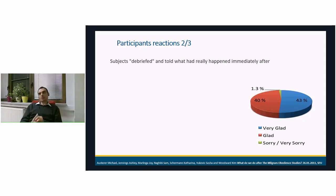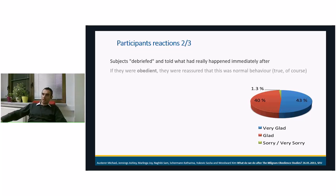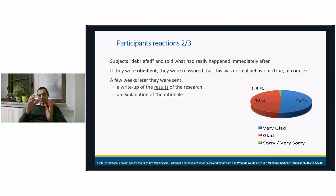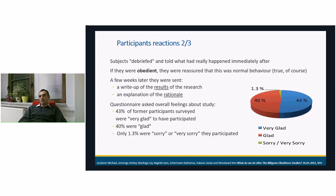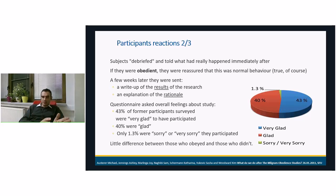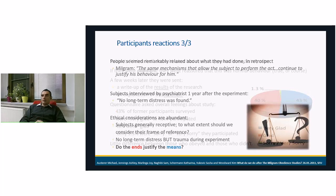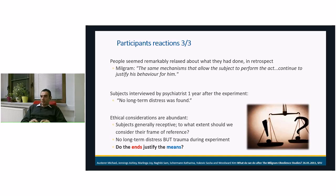At the end of the experiment, subjects were fully debriefed and told what had really happened. If they had been obedient, it was explained that this was normal behavior. A few weeks later, they were sent a write-up and explanation. 43% said they were very glad to have participated and 40% were glad. Only 1% were sorry. No long-term distress was found, but there was trauma. The question here is: do the ends justify the means?